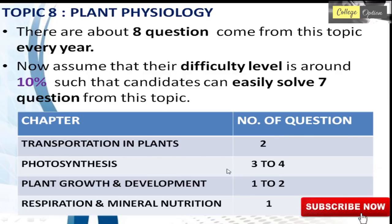The eighth topic is Plant Physiology, with about 8 questions asked every year. The difficulty level is 10% and candidates can easily solve 7 questions. There are 4 chapters: Transportation in Plants with 2 questions, Photosynthesis with 3 to 4 questions, Plant Growth and Development with 1 to 2 questions, and Respiration and Mineral Nutrition.